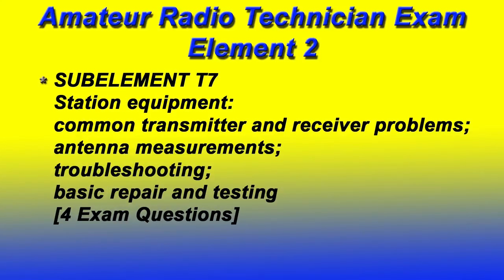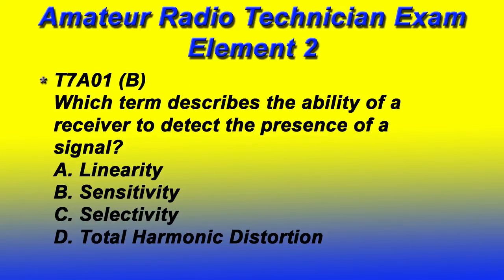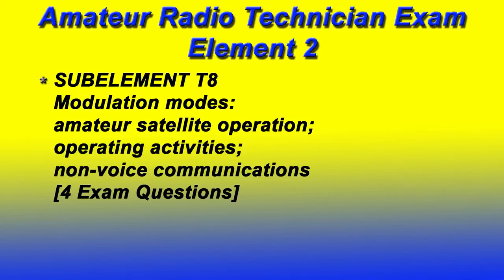T7 involves station equipment, including common transmitter and receiver problems, as well as antenna measurements, troubleshooting, basic repair, and testing. You can expect to see four questions from this section.